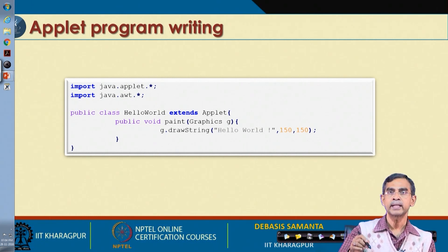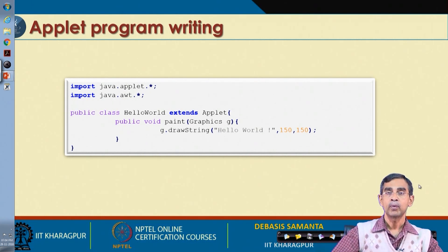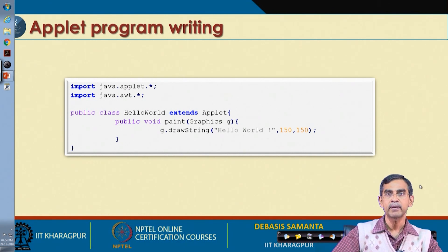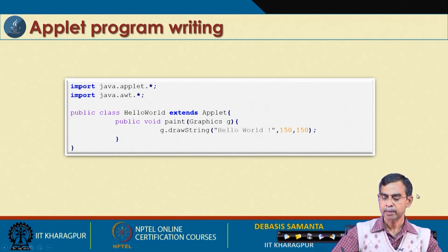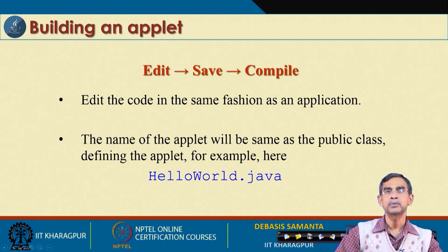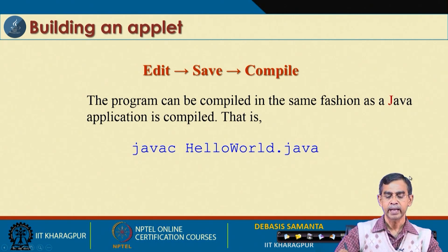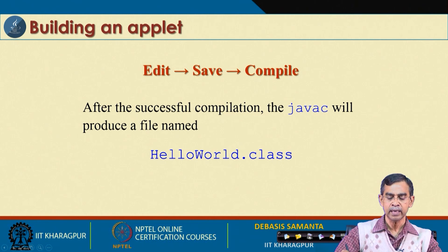This is a very simple Applet program that displays only one element — a string 'Hello World' — on the view area. Once the Applet is written, we can compile it but we cannot run it directly. This file is compiled — for example, HelloWorld.java — and after compilation HelloWorld.class will be created.